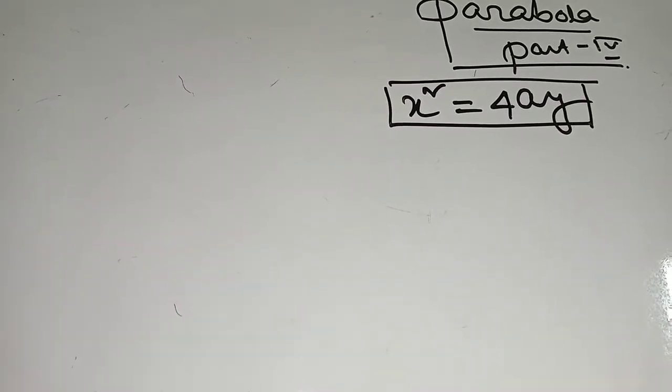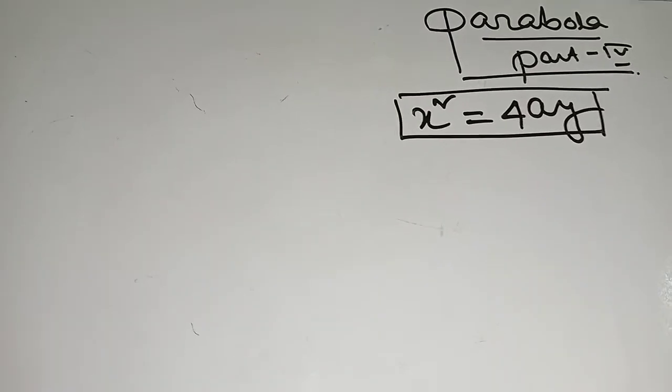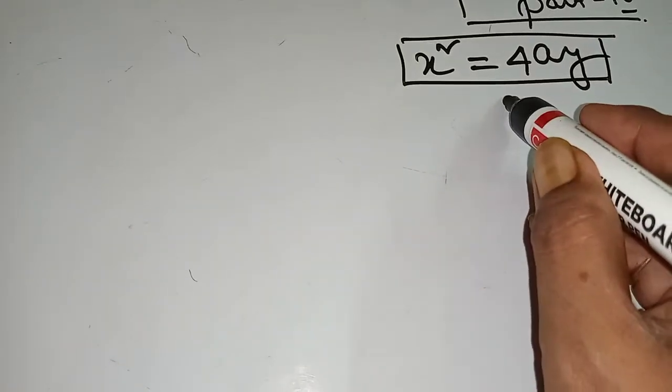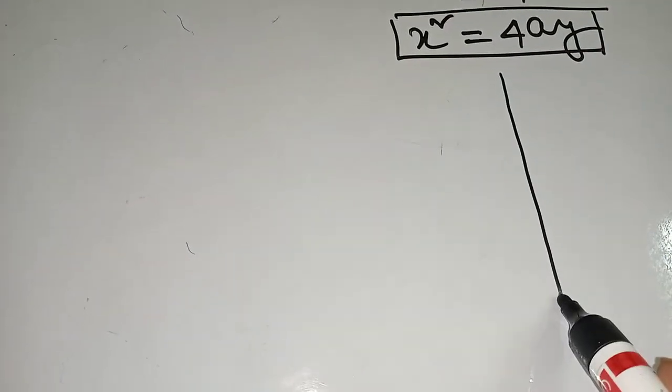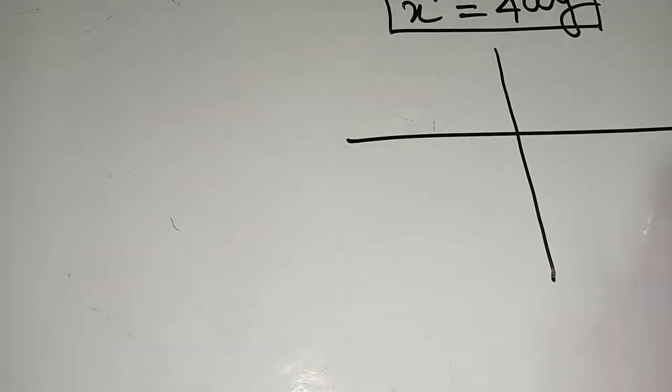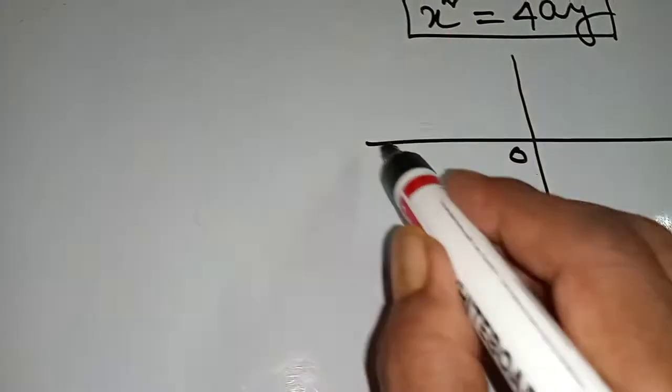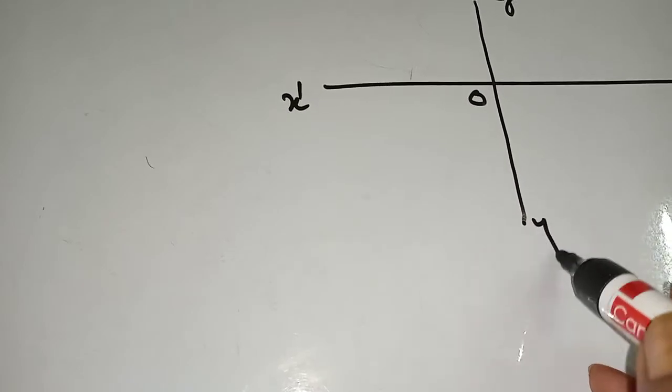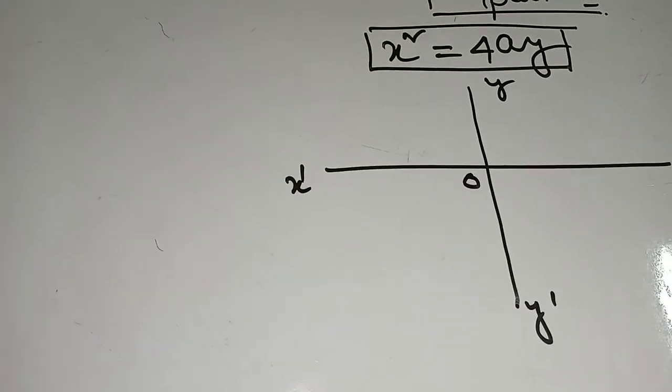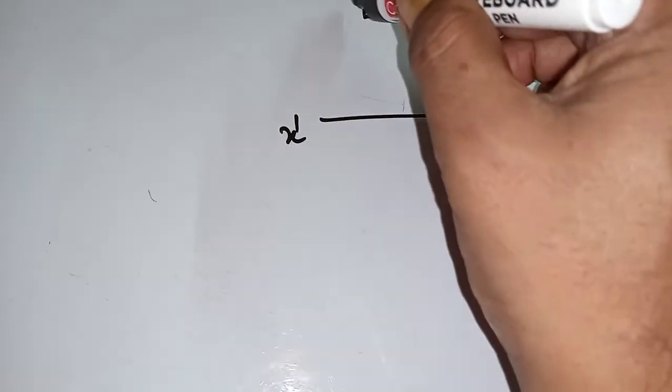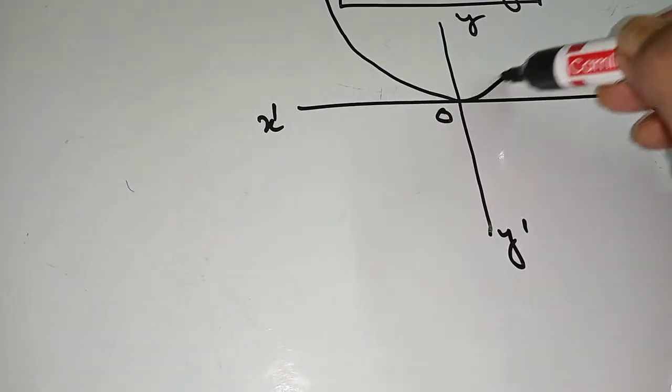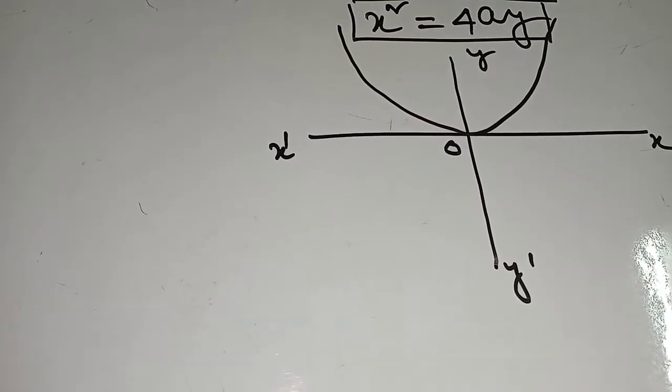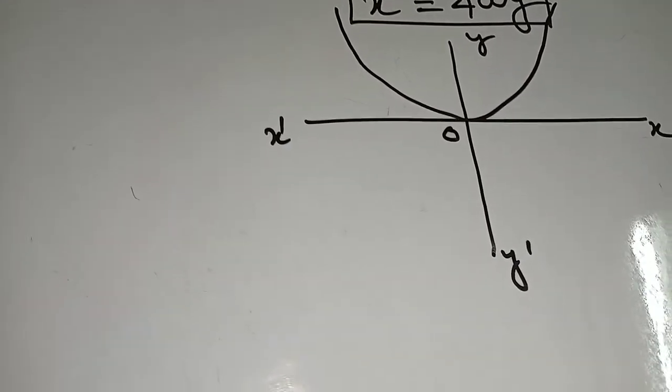I will discuss about this type of parabola. At first I will draw the figure. Drawing the x and y axes. This is x square equal to 4ay, that means this will be this.